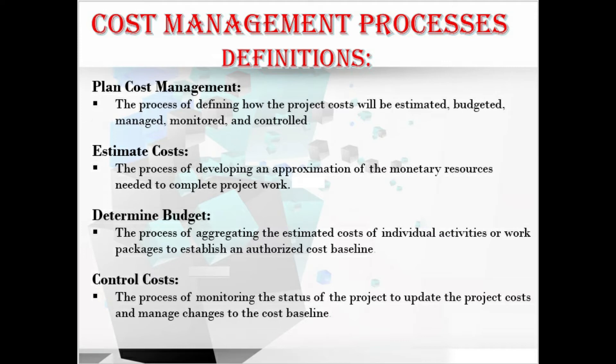Let's define each process. Plan cost management is the process of defining how the project cost will be estimated, budgeted, managed, monitored, and controlled. Estimate cost is the process of developing an approximation of the monetary resources needed to complete the project work. Determine budget is the process of aggregating the estimated costs of individual activities or work packages to establish and authorize the cost baseline. Control cost is the process of monitoring the status of the project to update the project cost and manage changes to the cost baseline.